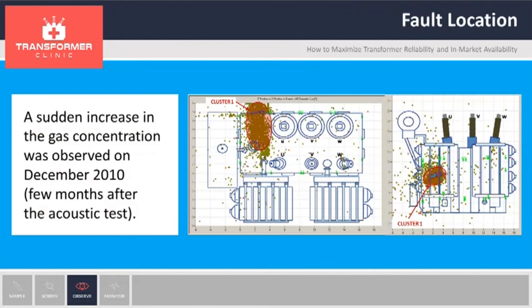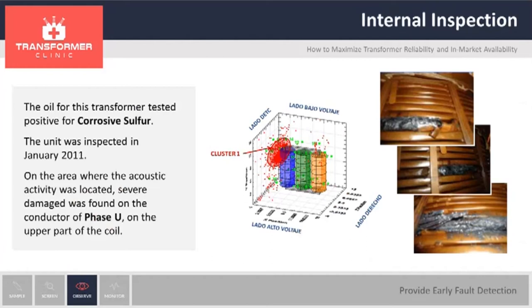Before the internal inspection, they looked at the acoustic report. We correlated the activity to phase U. Looking at the front view, you can see that everything was on the upper part of the coil, so they knew where to look for the problem. Before opening the transformer, they tested the oil. The oil tested positive for corrosive sulfur. As you probably know, corrosive sulfur attacks copper, especially on paper-insulated windings. This transformer had varnish instead of paper as insulation, so the varnish protects the winding from corrosive sulfur. However, when they opened the transformer and looked at the location we provided, they found some damage — a turn-to-turn failure on the winding.